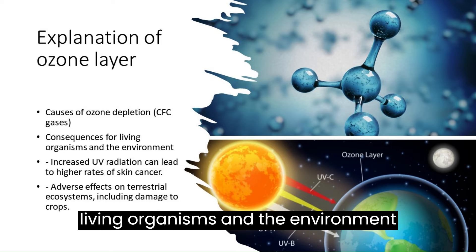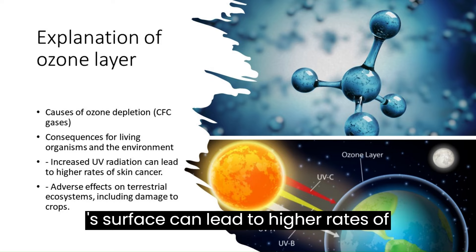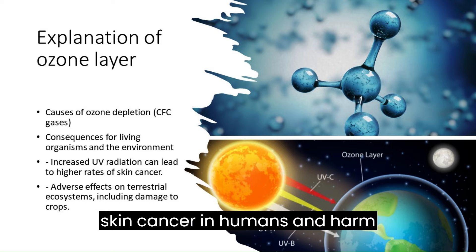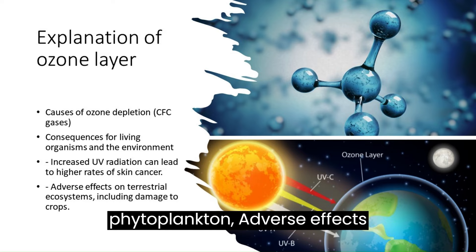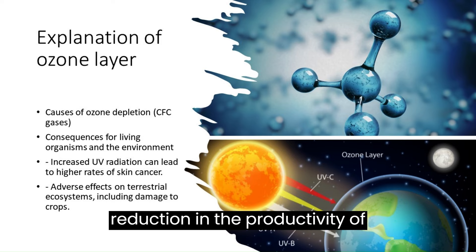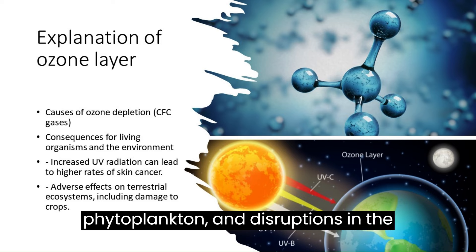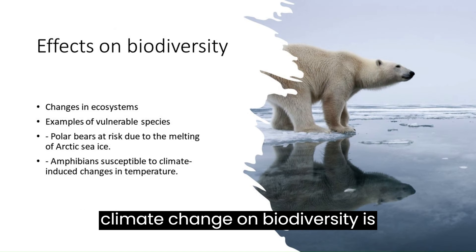Increased UV radiation reaching Earth's surface can lead to higher rates of skin cancer in humans and harm marine life such as phytoplankton. There are also adverse effects on terrestrial ecosystems, including damage to crops, reduction in the productivity of phytoplankton, and disruptions in the food chain.